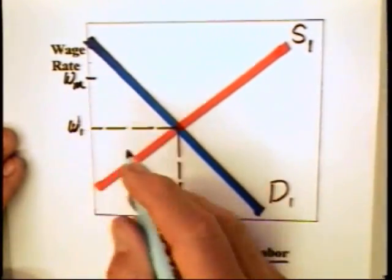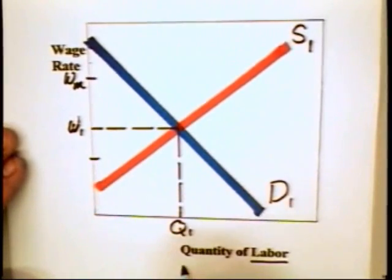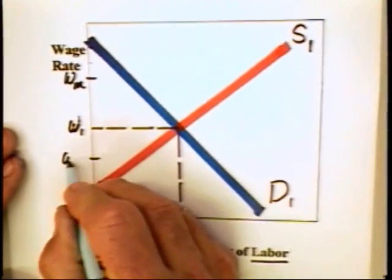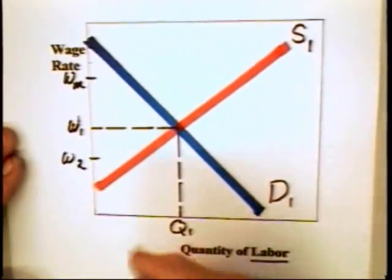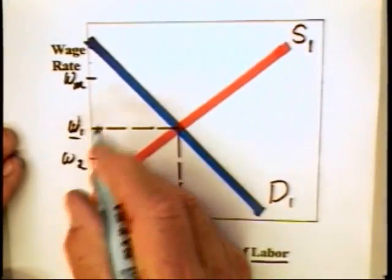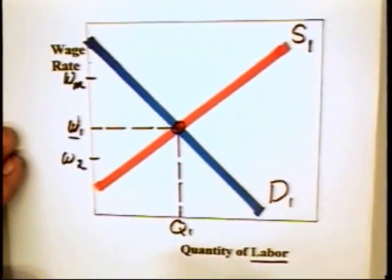suppose that Congress specifies a minimum wage that is WM. We assume that it's going to be above W1 simply because any minimum wage below W1 will not have an impact on worker wages. The reason is that a wage rate like W2 will not be effective. Workers will always receive W1 because that is the equilibrium.